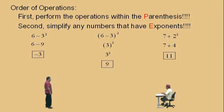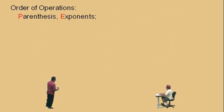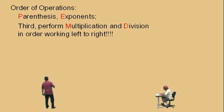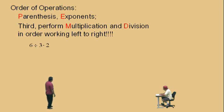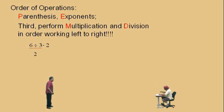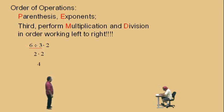Now let's go to our third one. We have parentheses, we have exponents, and now the third one — perform multiplication and division in order, working left to right. Very important. Here's an example: 6 divided by 3 times 2. A common error is to do the 3 times 2 first, but order of operations says you do multiplication and division at the same time, working left to right, whichever one comes first. Since the division is first here, we do 6 divided by 3, which is 2, then 2 times 2 is 4. Be very careful with these.